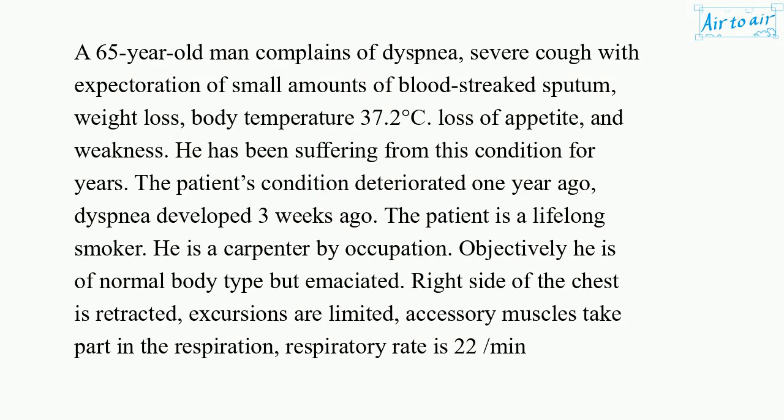A 65-year-old man complains of dyspnea, severe cough with expectoration of small amounts of blood-streaked sputum, weight loss, body temperature 37.2 degrees C, loss of appetite, and weakness. He has been suffering from this condition for years. The patient's condition deteriorated one year ago. Dyspnea developed three weeks ago.